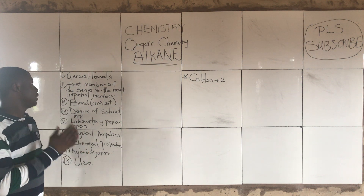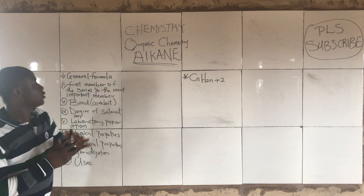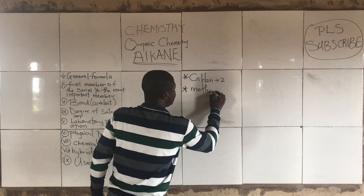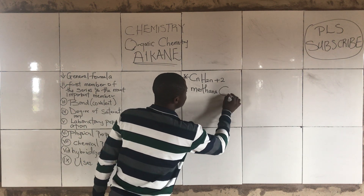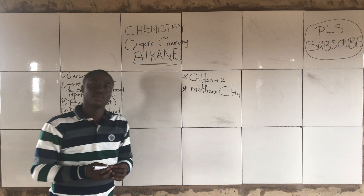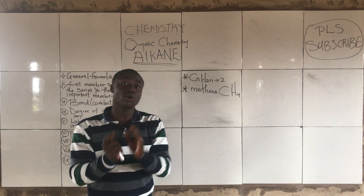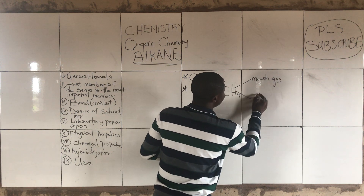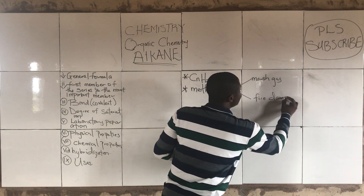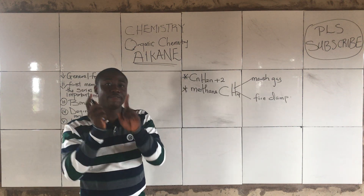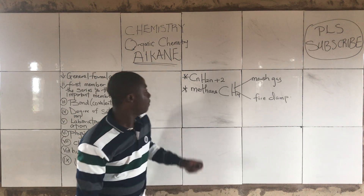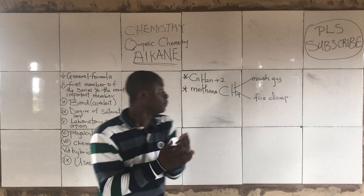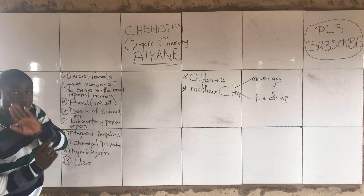The first member of this series, which is the alkane series, is basically called methane. The chemical formula is CH₄. Methane can also be called marsh gas and also called fire damp. It is called marsh gas when it is found in a moldy environment. Methane is the first member of alkanes.